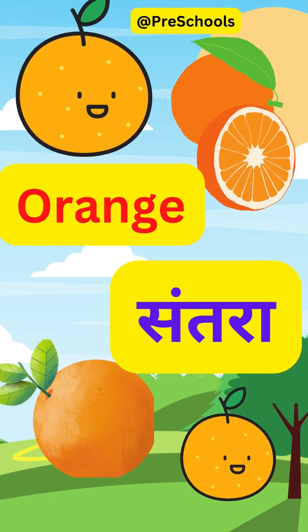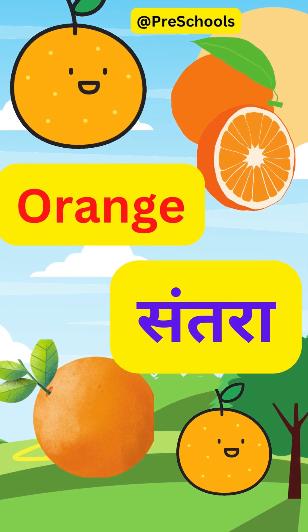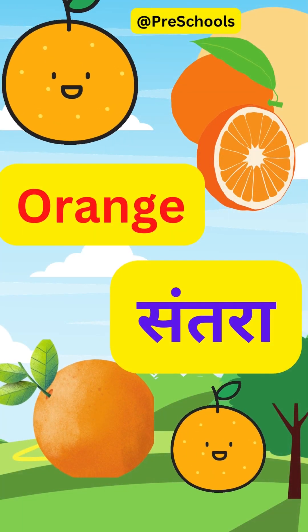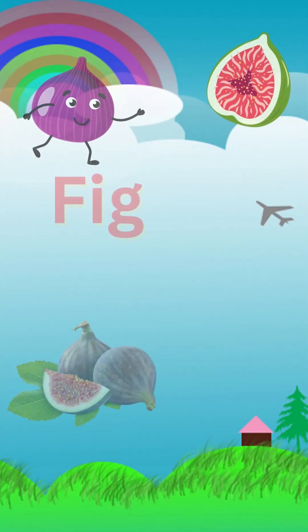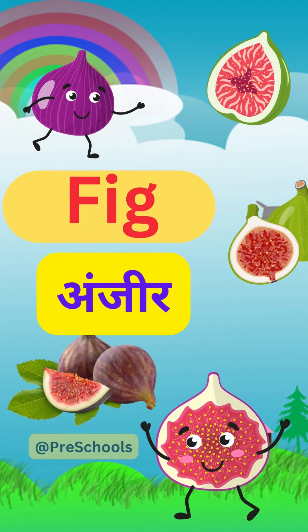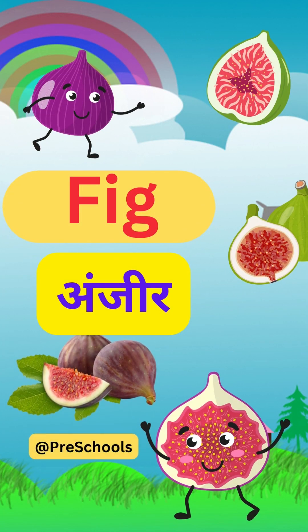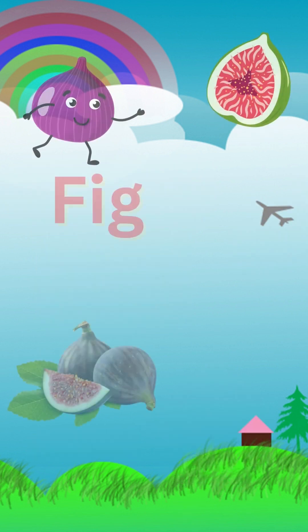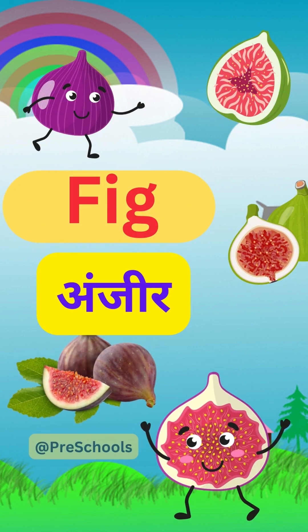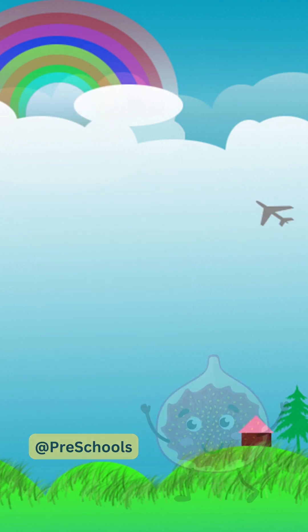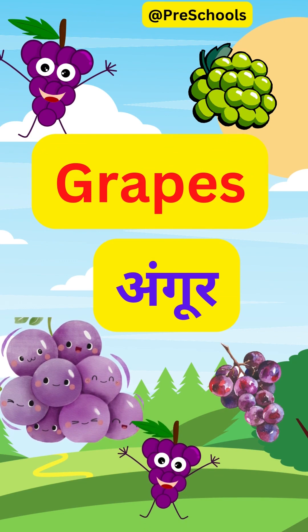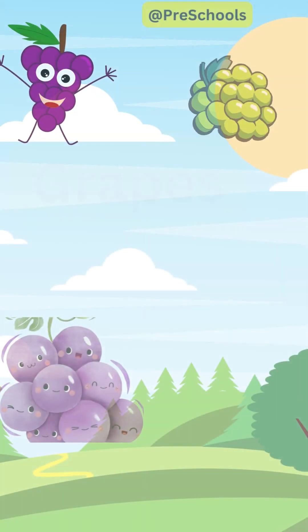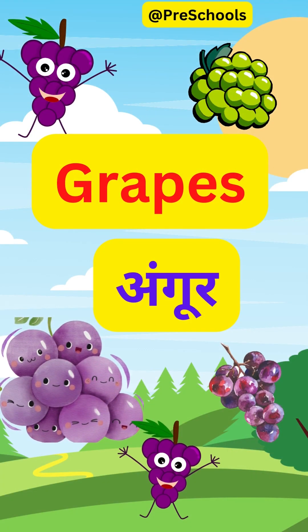Orange. O-R-A-N-G-E. Orange. In Hindi, Samtra. Fig. F-I-G. Fig. In Hindi, Anjir. Grapes. G-R-A-P-E-S. Grapes. In Hindi, Angur.